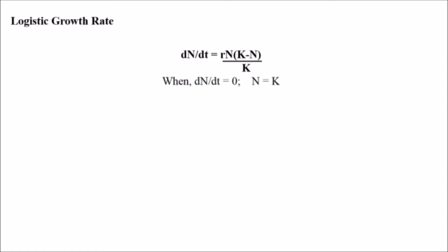When there is no competition among species, it will simply follow the logistic growth rate: dN/dt = rN × (K − N)/K, where K is the carrying capacity of the species in its particular niche and N is the number of individuals. When dN/dt equals zero, N will equal the carrying capacity — meaning the number of individuals will reach up to its carrying capacity.